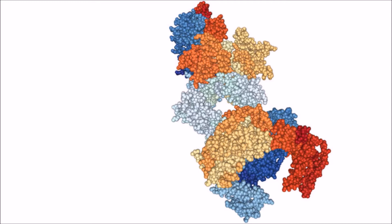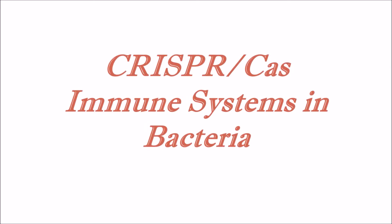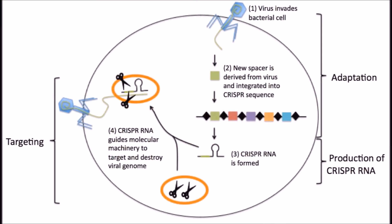The CRISPR-Cas system is a form of adaptive immunity in bacteria. CRISPR, which stands for Clustered Regularly Interspaced Short Palindromic Repeats, refers to repetitive DNA sequences that were discovered in bacterial DNA. These repetitive sequences were found to have viral genome snippets, or spacers, between them. It is now known that these spacers are used by Cas proteins to specifically target invading viral genomes.